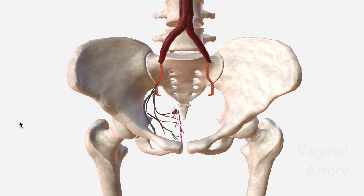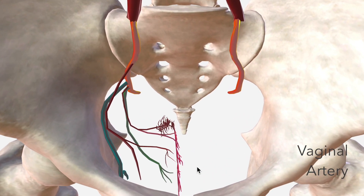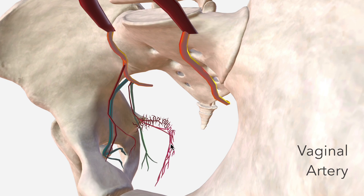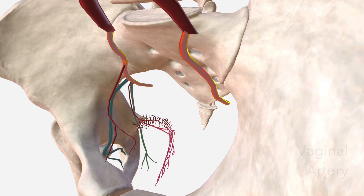Next, we have the vaginal artery, shown in pink, which is often considered to be the equivalent of the inferior vesicle artery — said in some texts to be only present in males. The vaginal artery supplies the lower part of the vagina, as well as the rectum.